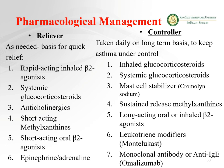For pharmacological management: short-term reliever drugs are used on an as-needed basis for quick relief. These include rapid-acting beta-2 agonists, systemic glucocorticoids for very short periods during status asthmaticus, short-acting anticholinergics, short-acting methylxanthines, and epinephrine — all causing bronchodilation or inhibiting inflammation.